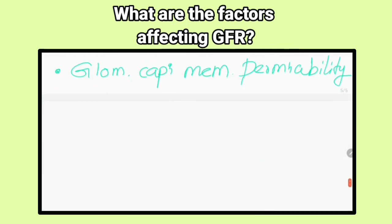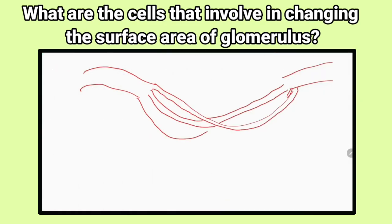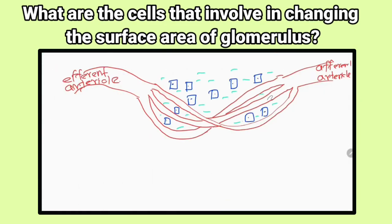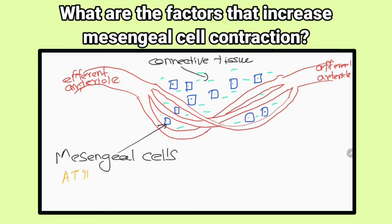What are the cells that involve in changing the surface area of the glomerulus? Mesangial cells. What are the factors that increase mesangial cell contraction? Angiotensin II, vasopressin, norepinephrine, histamine, endothelins, leukotrienes, and thromboxane A2.